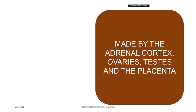The steroid hormones are made by the adrenal cortex, the ovaries, the testes, and the placenta. So you have reproductive organs and you have the adrenal cortex.